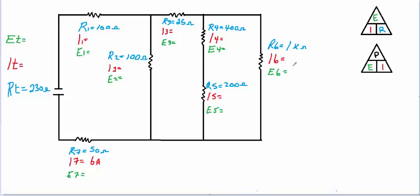Now that we have our total resistance of 230 ohms, we've also got a given value of 6 amps on the return path. So if we have 6 amps coming back, we must have 6 amps going into the circuit — the total current in must equal the total current out. So we have 6 amps total. Using Ohm's Law, E equals I times R: 6 amps times 230 ohms gives us a total voltage of 1,380 volts.